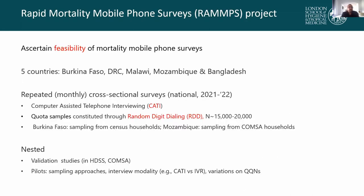That brings us to a new project we are just starting up right now — the Rapid Mortality Mobile Phone Surveys Project — with an objective to ascertain the feasibility of conducting mortality mobile phone surveys in five countries: Burkina Faso, the DRC, Malawi, Mozambique, and Bangladesh. The intent is to conduct repeated cross-sectional surveys with a national sampling frame over the next 12 months, spread over 2021–2022.